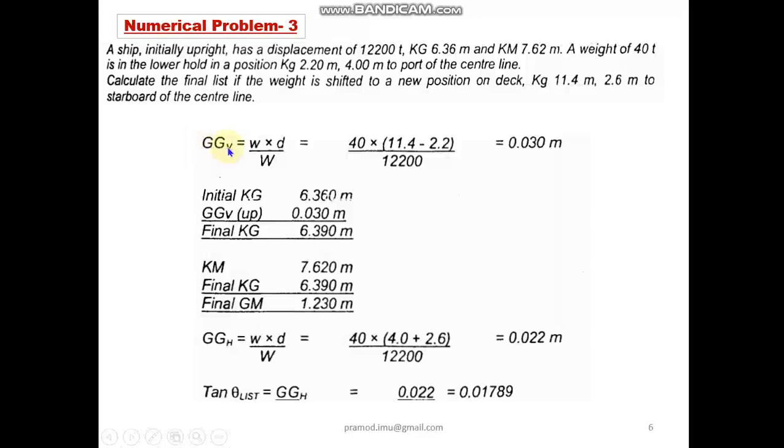This is clearly a section where we need to calculate the shift of mass in the vertical plane. So if we again take our formula GGv, where GGv is the new position of center of gravity in the vertical plane, is w × d / W, where small w is the mass which is given as 40 tons.